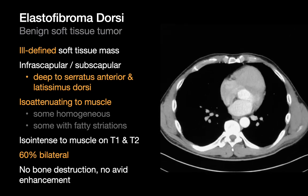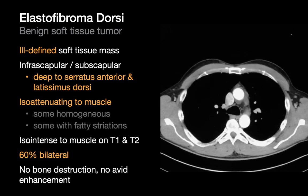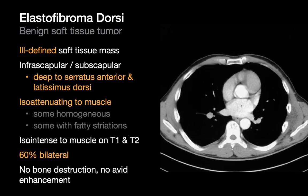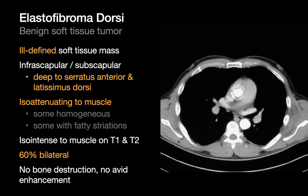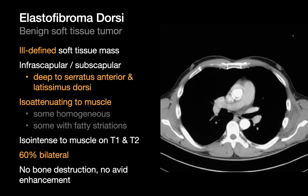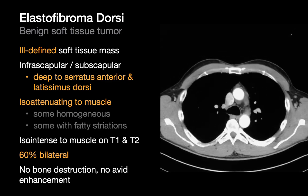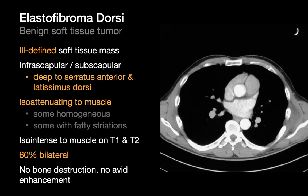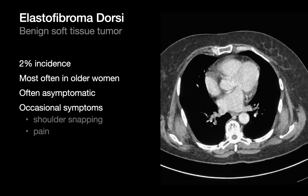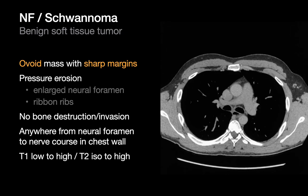Elastofibroma dorsi are typically isoattenuating to muscle on CT. When soft tissue masses fitting this description are present bilaterally, we usually call these elastofibroma dorsi and recommend no further imaging or workup. However, when such a mass is unilateral, it could be one of the 40% of elastofibroma dorsi cases that are unilateral, but since other non-specific soft tissue tumors need to be excluded, we may proceed to an MRI.